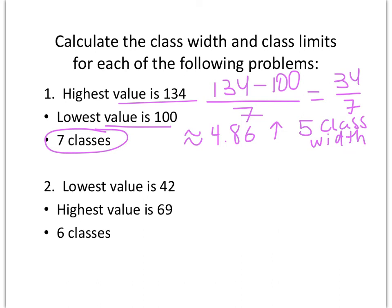Now, to set the class limits, my first number would start with the lowest value. Okay, so what we're doing now is we're setting up our classes. These are the buckets for our tallies. You start with your lowest number, which is 100.